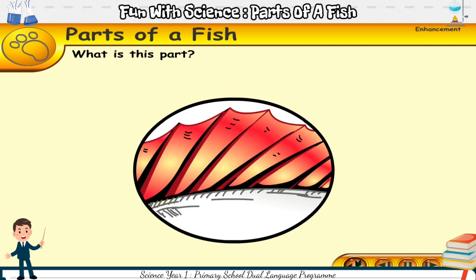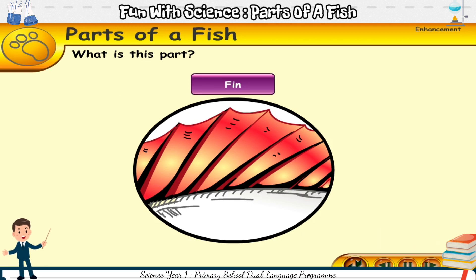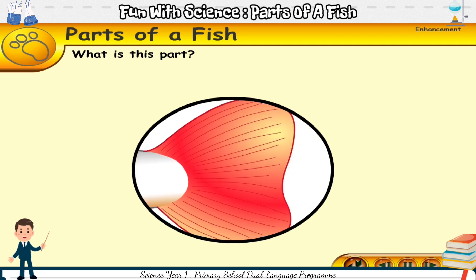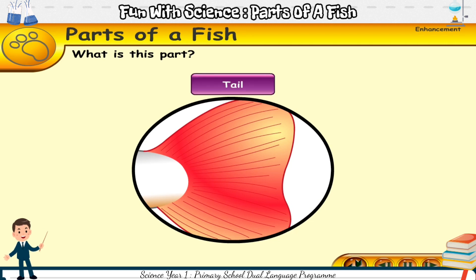What is this part — scale or fin? This is the fin of the fish. A fish uses fins to swim. What is this part — tail or scale? This is the tail of the fish. A fish uses the tail to swim.